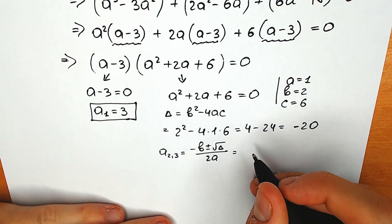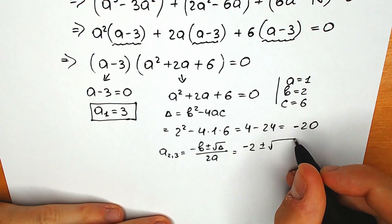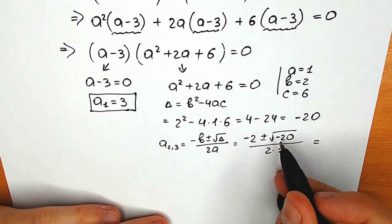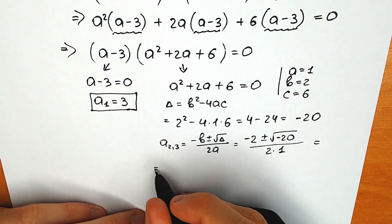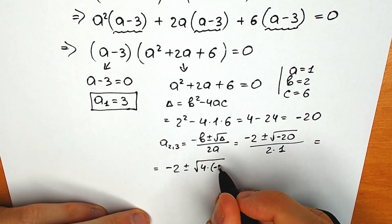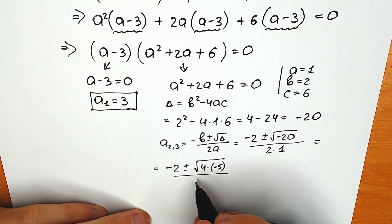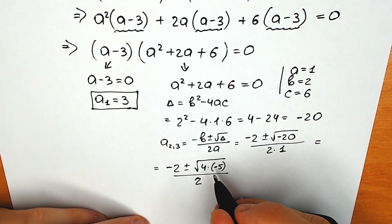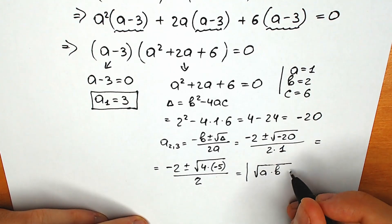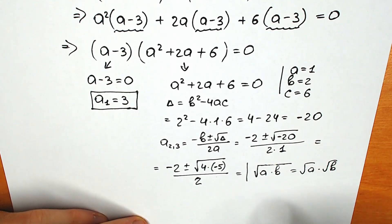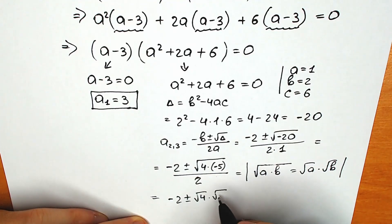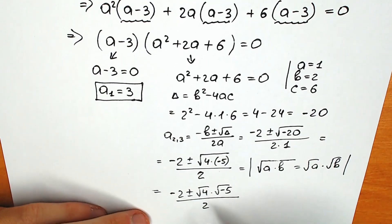Using the quadratic formula, a₂ and a₃ equal minus b plus or minus the square root of the discriminant, all over 2a. Plugging in: minus 2 plus or minus the square root of minus 20, divided by 2. We can express minus 20 as 4 times minus 5, so we have minus 2 plus or minus the square root of 4 times minus 5, divided by 2. Using the property that the square root of a times b equals the square root of a times the square root of b, we split this into the square root of 4 times the square root of minus 5, and the square root of 4 is 2.